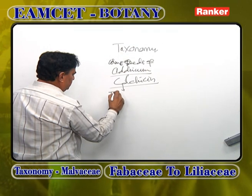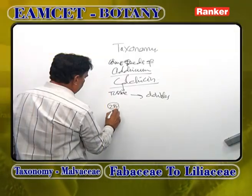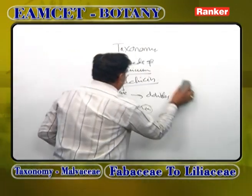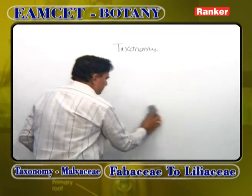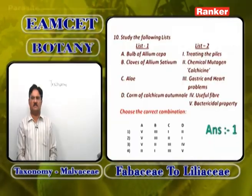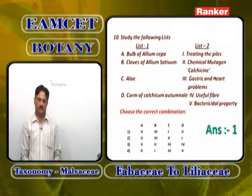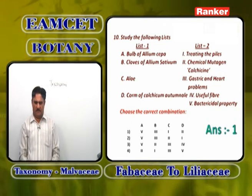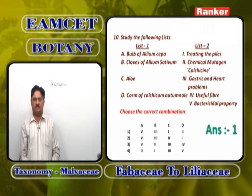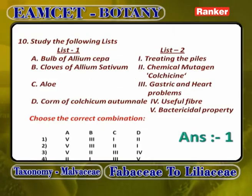When colchicine is added to any tissue, its chromosomal number doubles. If a 2N zygote is treated with colchicine, it becomes 4N. Colchicine prevents formation of spindle fibers during metaphase — called endomitosis — resulting in doubling of chromosomes. So colchicine is widely used in producing polyploids. Answer: bulb of Allium cepa = bactericidal; cloves of Allium sativum = gastric/heart; Aloe = treating piles; Colchicum corm = colchicine mutagen. Answer is 1.